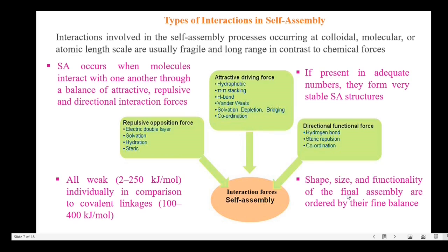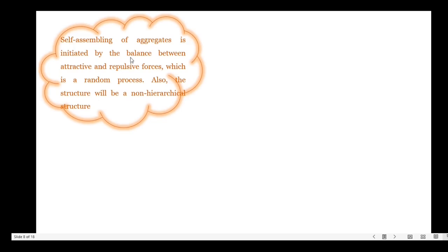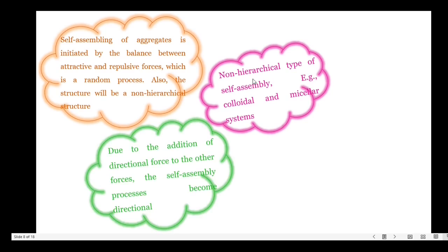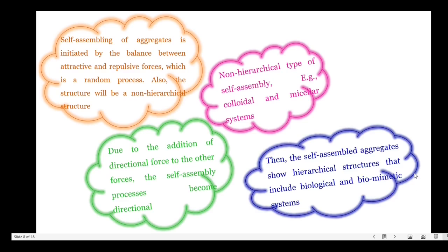Thus, the shape, size and functionality of the final assembly are ordered by the fine balance of these forces. Self-assembling of aggregates is initiated by the balance between attractive and repulsive forces, which is a random process, and the resulting structure will be a non-hierarchical structure. Examples for non-hierarchical type are colloidal and micellar systems. This non-hierarchical structure is transformed into hierarchical structure due to the addition of directional force, and then the self-assembled aggregates show hierarchical structures — for example, biological and biomimetic systems.